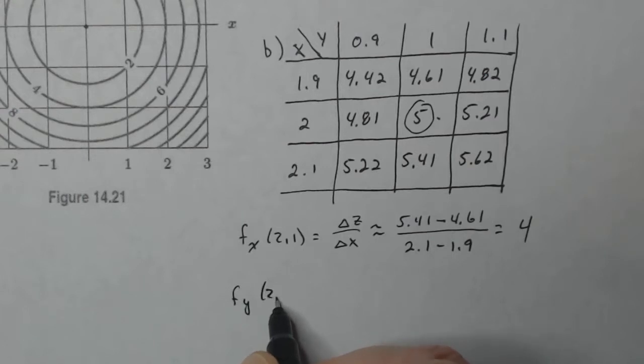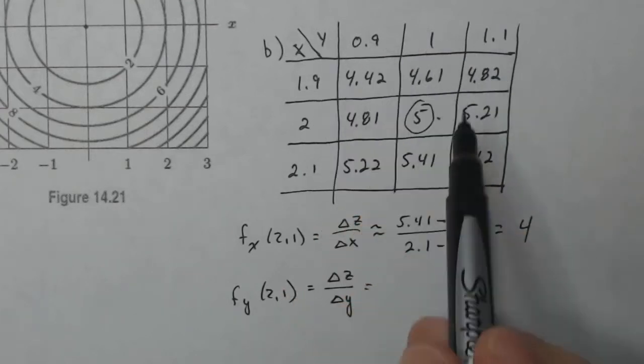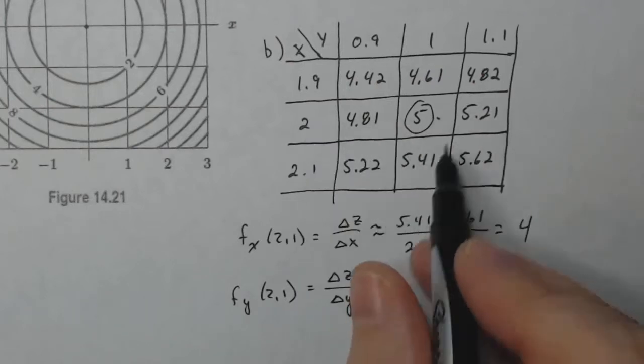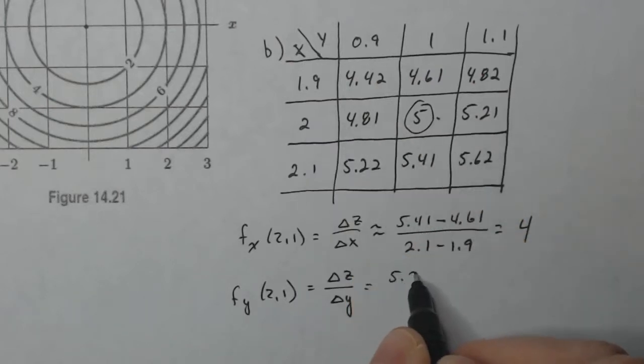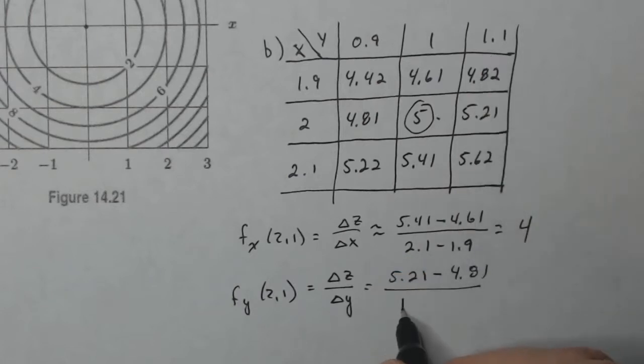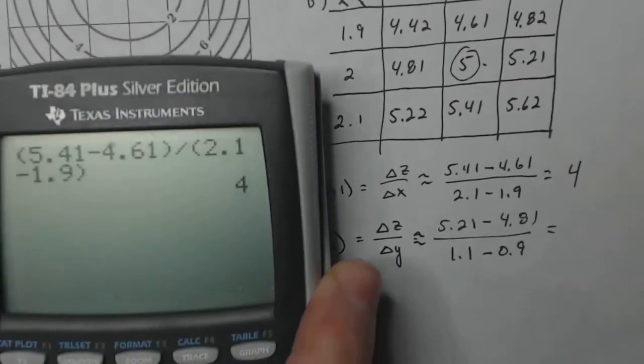F sub y at 2,1 is going to be the change in Z over the change in Y. So now my Y is changing. Notice that this is Y. My Y is changing, my X is staying fixed. So again, I'll do the central difference quotient. So 5.21 minus 4.81, that's a change in Z, divided by 1.1 minus 0.9. And let's see what that gives me. This should be an approximation right here.